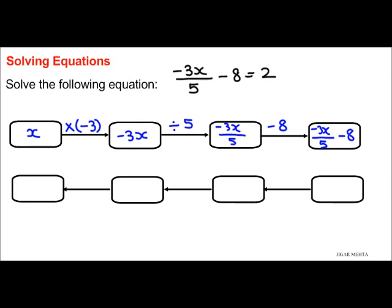So, now I am just going to go backwards and use the opposite operations to get the value of x. Starting with 2, because negative 3x over 5 minus 8 equals 2, as per the question.